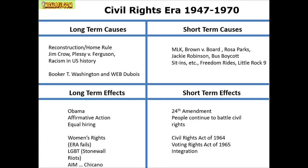The short-term effects of the civil rights era include the Civil Rights and Voting Rights Acts — huge — as well as the 24th Amendment getting rid of poll taxes. Long-term effects link not only to the African-American community but also to LGBT, AIM (the American Indian Movement), Chicano, equal hiring, equal pay, and under Obama, getting rid of Don't Ask, Don't Tell. You can utilize what happened in the 1960s to argue for things that happened after.